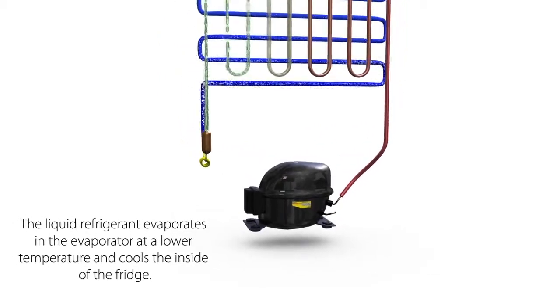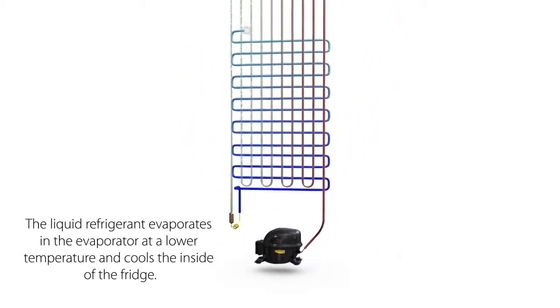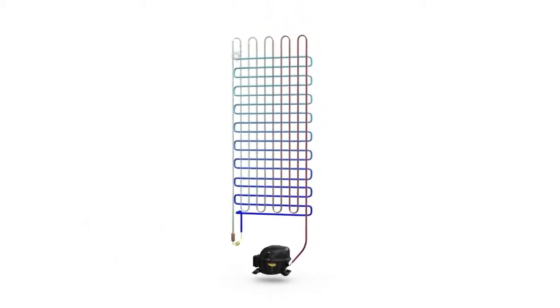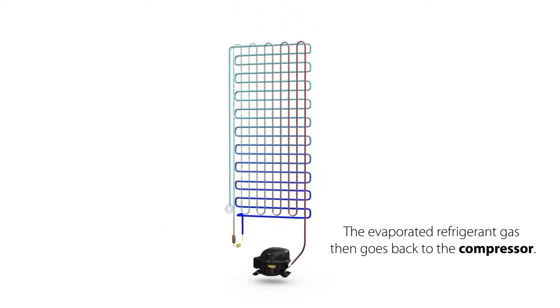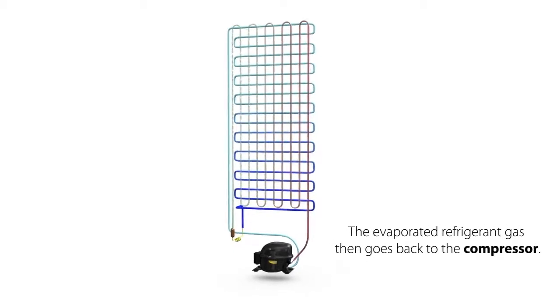The liquid refrigerant evaporates in the evaporator at a lower temperature and cools the inside of the fridge. The evaporated refrigerant gas then goes back to the compressor.